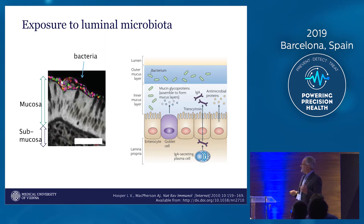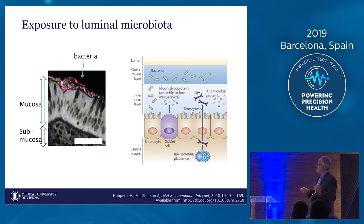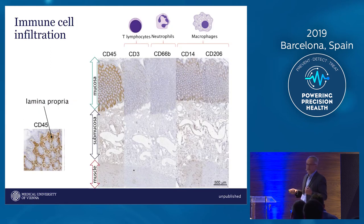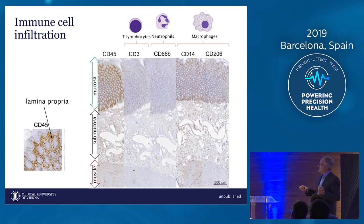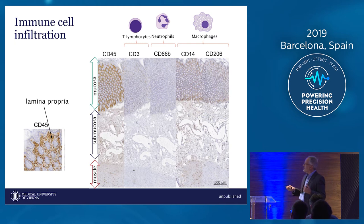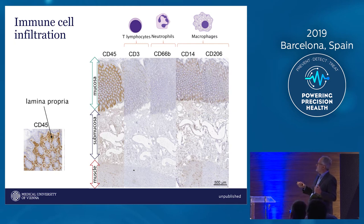Then we have IgA-producing plasma cells, and the epithelial cells themselves produce antimicrobial proteins. Therefore, we have a huge number of immune cells in the submucosa. They consist of lymphocytes, neutrophils, and macrophages.